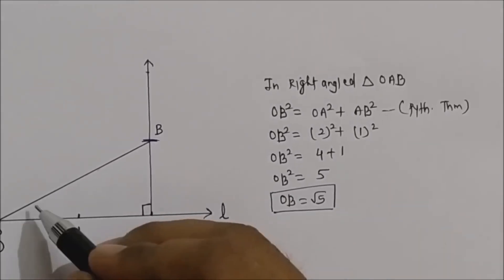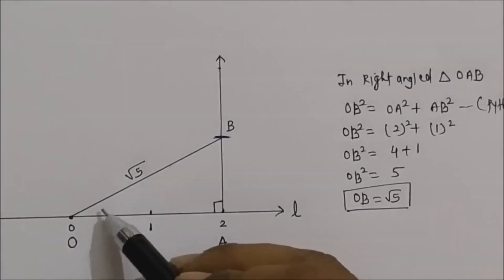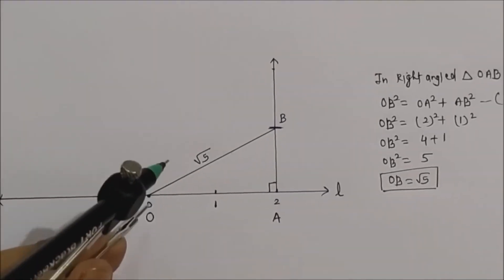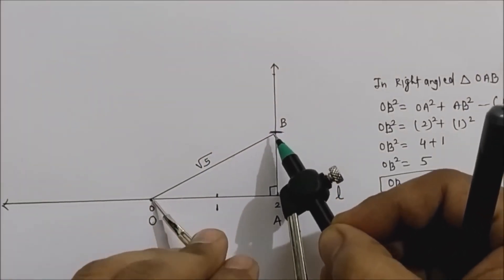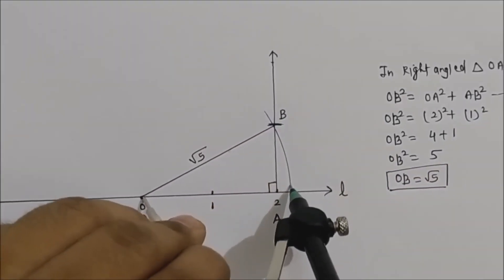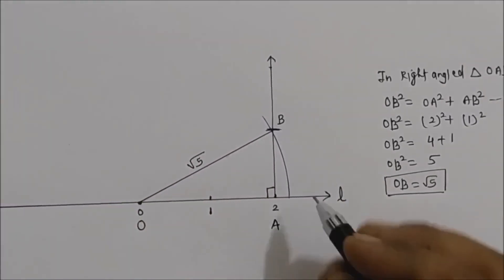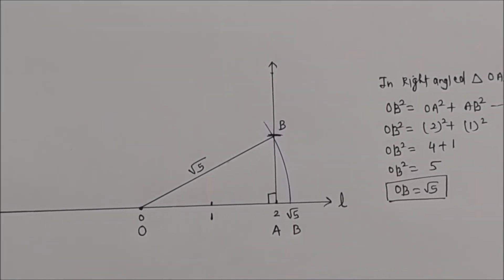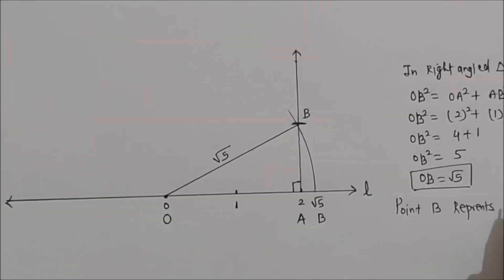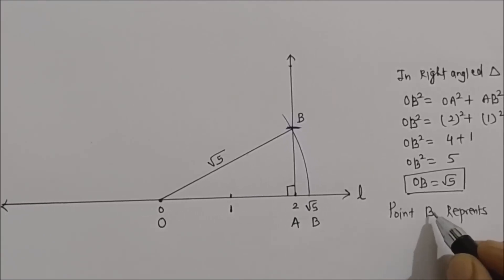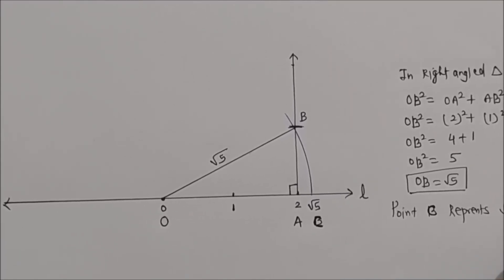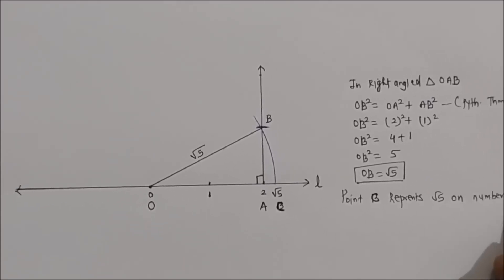We have found OB = √5, and now we need to represent this on the number line. Take a compass, place it on point O, and take the distance O to B — which is √5 — and cut an arc on the number line. Mark this point as point C. Point C represents √5 on the number line.